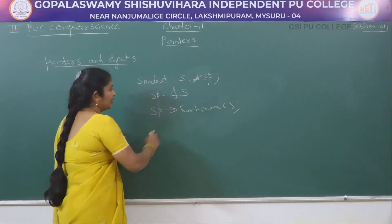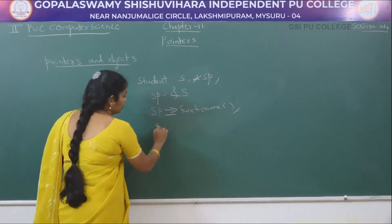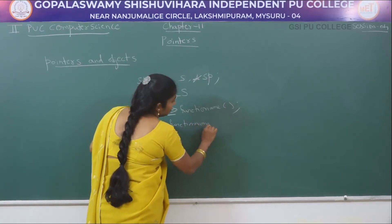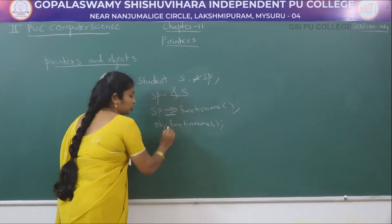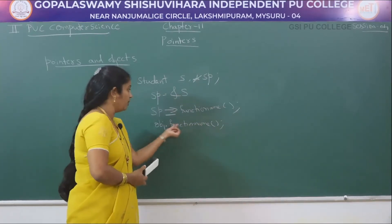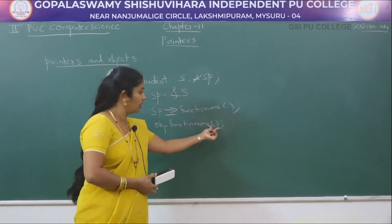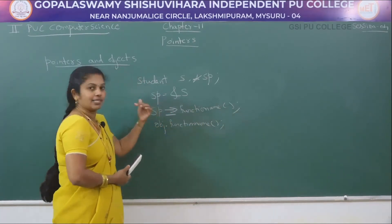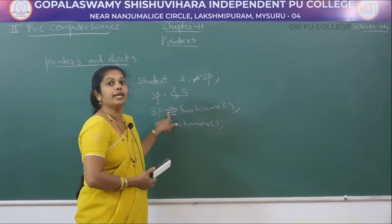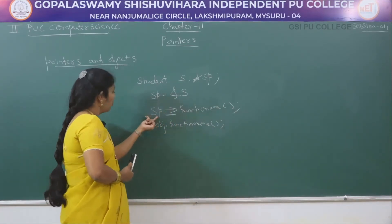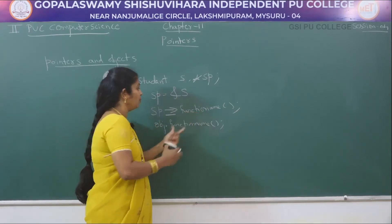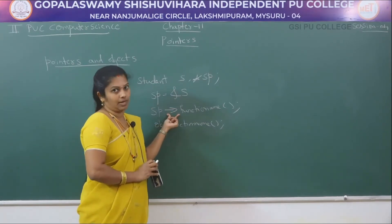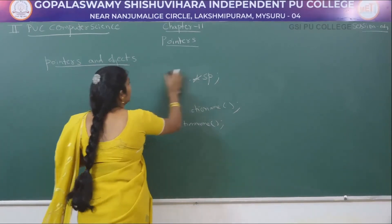If I want to call a function using the regular object, I write: object dot function name. Whereas with a pointer to object, I must use the arrow operator: pointer object arrow function name. The arrow operator is written as minus sign followed by greater than symbol (->). This is the only difference between regular objects and pointer objects when calling functions.